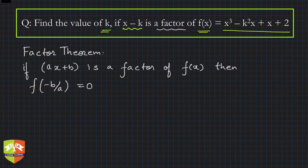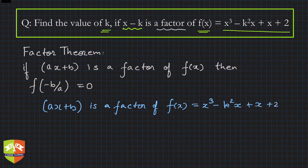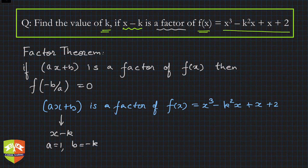Now let's compare ax plus b with our case. Here f(x) is x cube minus k squared x plus x plus 2, and ax plus b in our case is x minus k. So clearly a is 1 and b is minus k, which means minus b upon a is simply k.